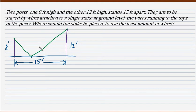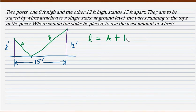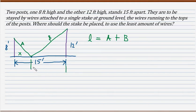We have to make an equation containing the length of the wire. Let's call the two wire segments A and B. The total length of the wire is equal to A plus B. We'll assign the distance from the stake to the shorter post as X, so the distance from the stake to the taller post is 15 minus X.